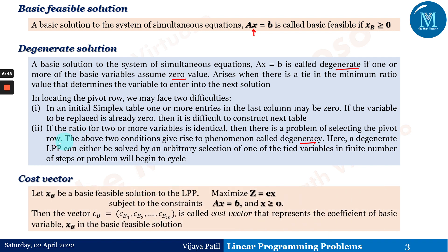The cost vector: let x_B be the basic feasible solution to the LPP — maximize z = cx subject to Ax = b and x ≥ 0. The vector c_B, consisting of elements cb1, cb2, cb3 and so on, is called the cost vector. It represents the coefficients of the basic variables x_B in the basic feasible solution.